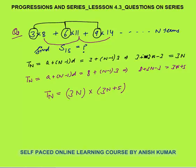Verify: first term gives 3×8 and second term gives 6×11. Expanding the nth term: 3n(3n+5) = 9n² + 15n. This is the nth term. Now finding the sum of 15 terms, we write each term and add: S₁₅ = 9(1² + 2² + ... + 15²) + 15(1 + 2 + ... + 15).